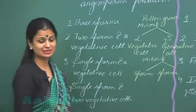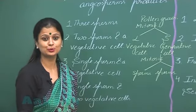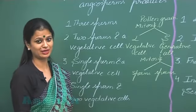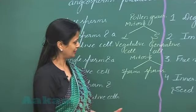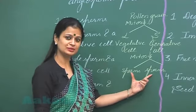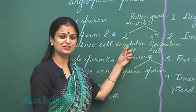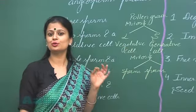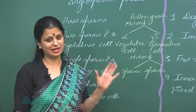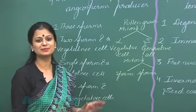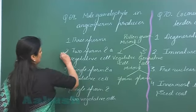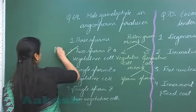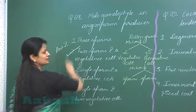So we would say that in the case of the mature male gametophyte, there is presence of three cells. Two are sperms and one is vegetative cell. Mature male gametophyte in angiosperms maximally contain three cells. So what would be the right option here? That is option number two. So this is the right answer.